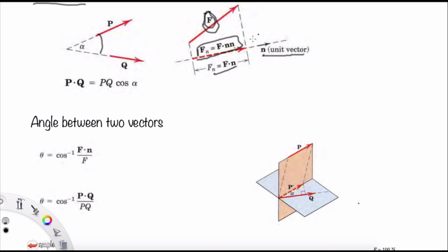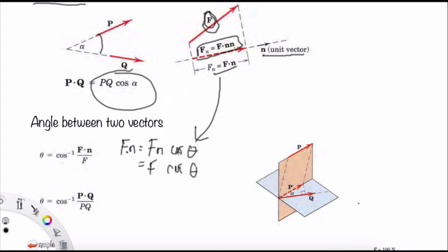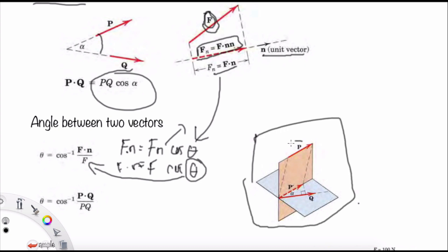For the angle between two vectors: using the dot product, F dot n equals F·n·cos theta. Since n is a unit vector (magnitude 1), this simplifies to F dot n equals F cos theta. Therefore theta equals cos inverse of (F dot n divided by F). More generally, the angle between vectors P and Q is theta equals cos inverse of (P dot Q divided by PQ).